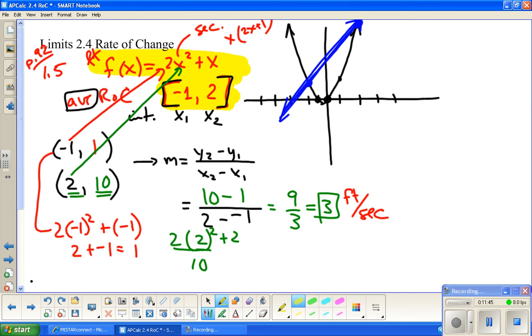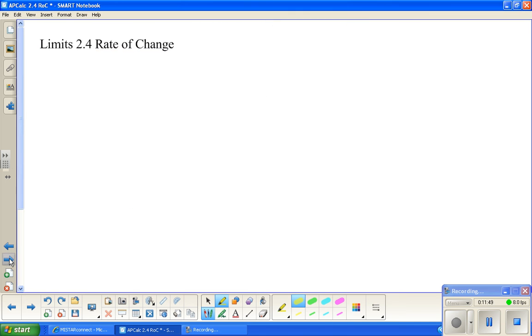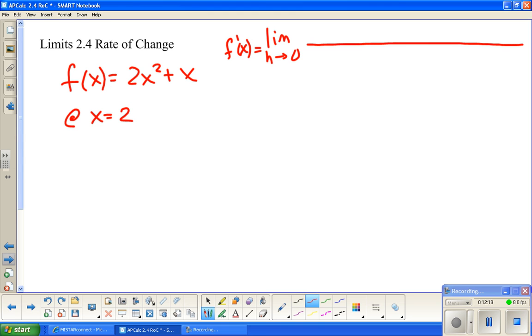I want to go back to that same f of x equals 2x squared plus x. And, instead of finding the average rate of change on that interval, what we're going to do is find it at a specific x value. So, the formula for this is we're going to do the limit as h approaches zero. And, this is going to be for f prime. I really need just to do the formula. So, f of x plus h minus f of x all over h.